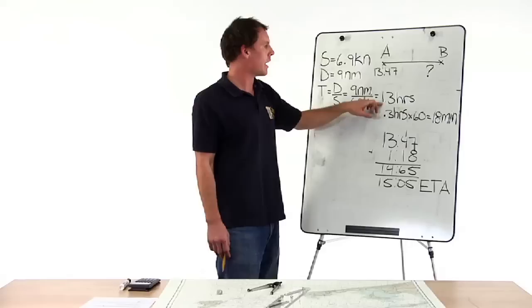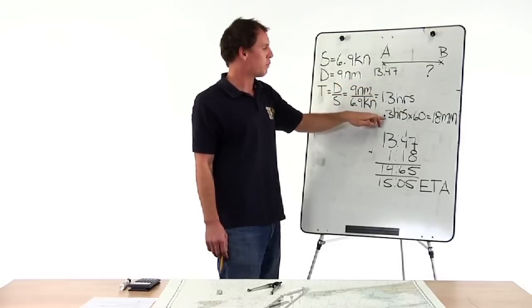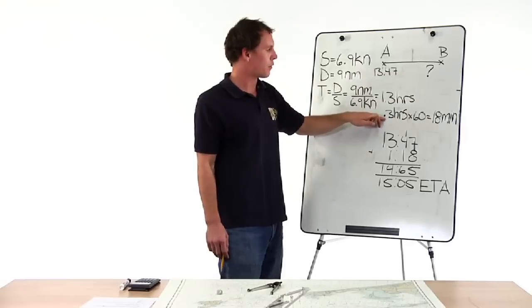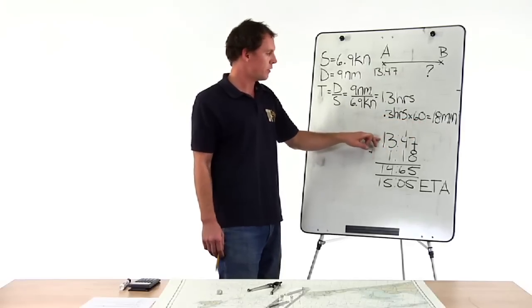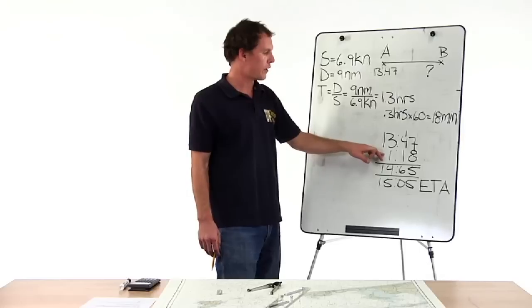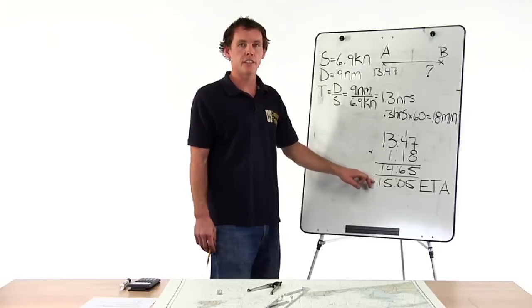This 1.3 hours has to be added to 1347. Take 0.3 hours times 60 to get 18 minutes. 1347 plus one hour 18 minutes is 1505. That's the ETA.